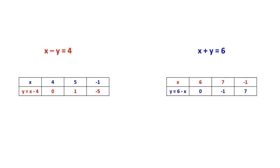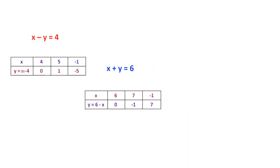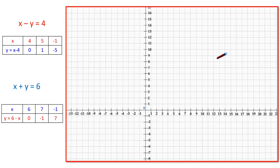Similarly, to find the coordinates for x plus y equals 6: if x equals 6, then y equals 0. If x equals 7, then y equals minus 1. If x equals minus 1, then y equals 7.